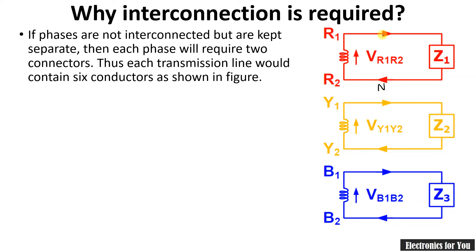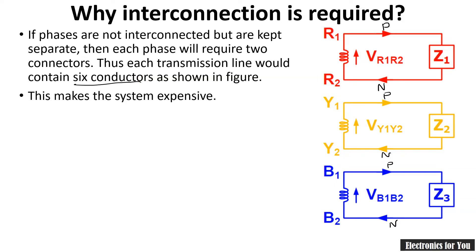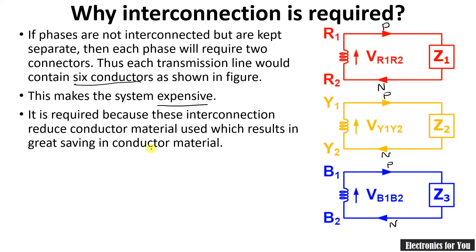We require one phase wire and one neutral wire. Similarly, for yellow phase you will require two wires, and for blue phase also two wires. So in this case we require six conductors for the transmission of electricity, making the system expensive. If we do interconnection, the need for conductors will reduce, saving conductor material and making it economical to transmit electricity.